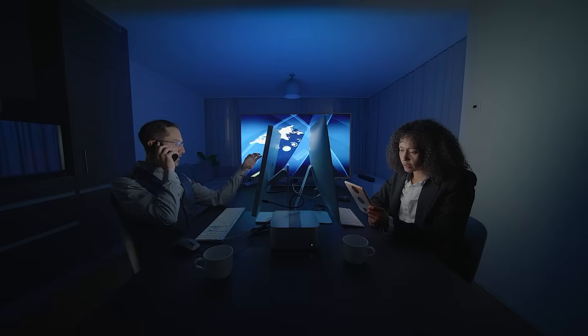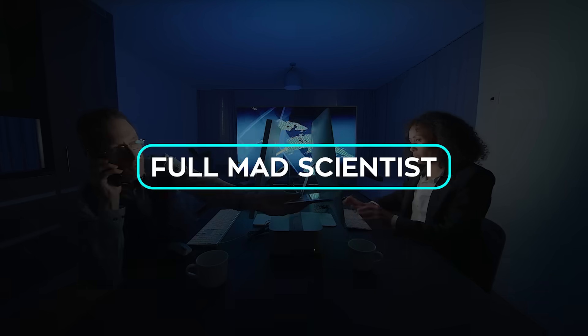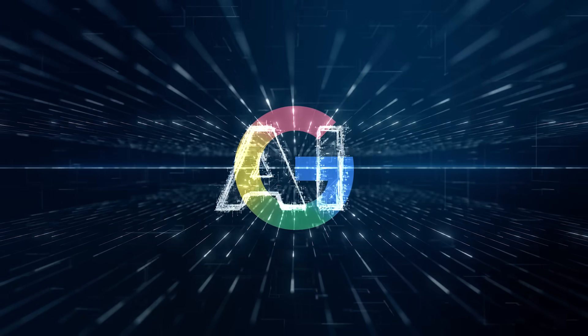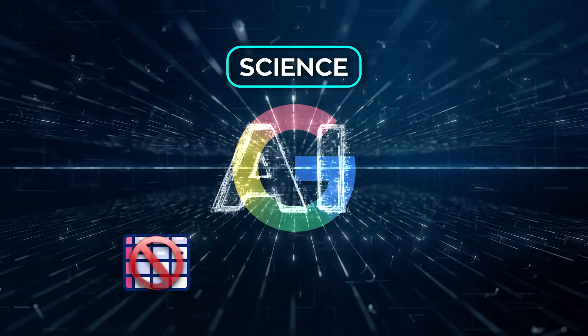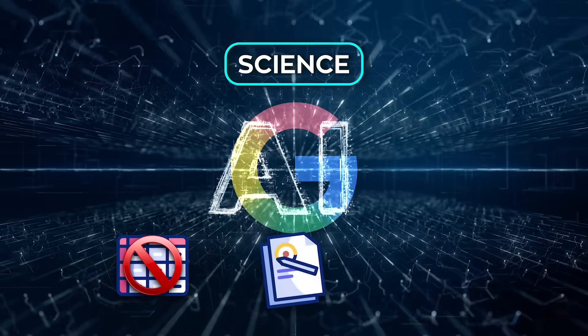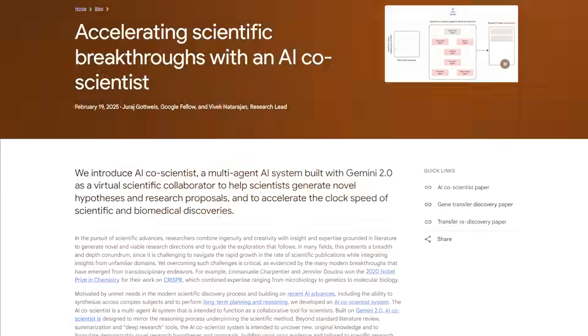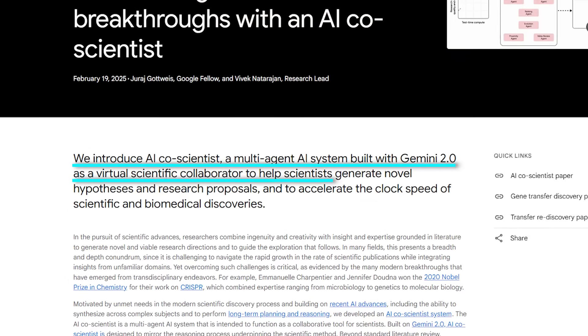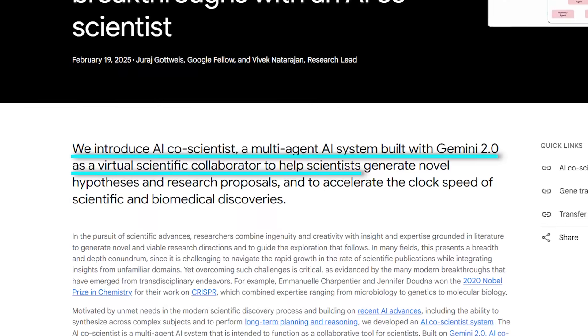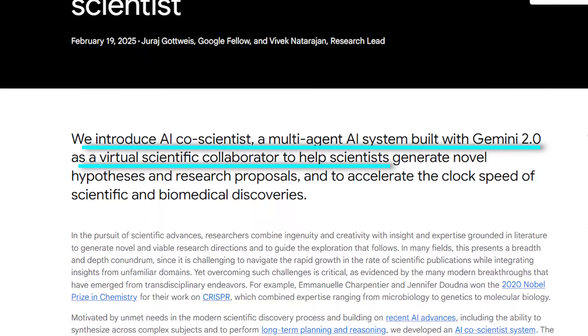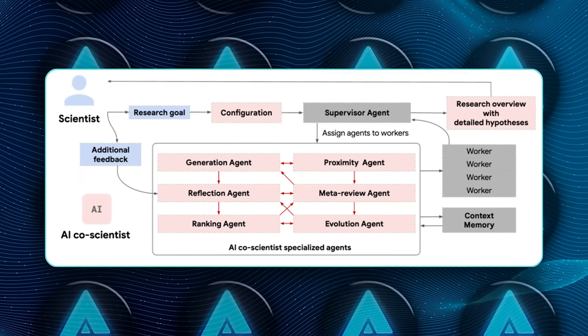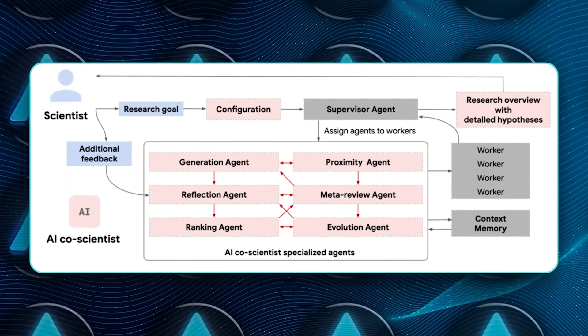Now, while Google's research nerds were busy teaching small models how to think, another team over at DeepMind decided that wasn't enough, so they went full mad scientist and built an AI that actually does science. Not helping with spreadsheets science, like publishing papers and solving decade-old mysteries science. They call it the AI Co-Scientist. And it's built on top of Gemini 2.0. But it's not a single model. It's a full team of agents, each with a scientific role.